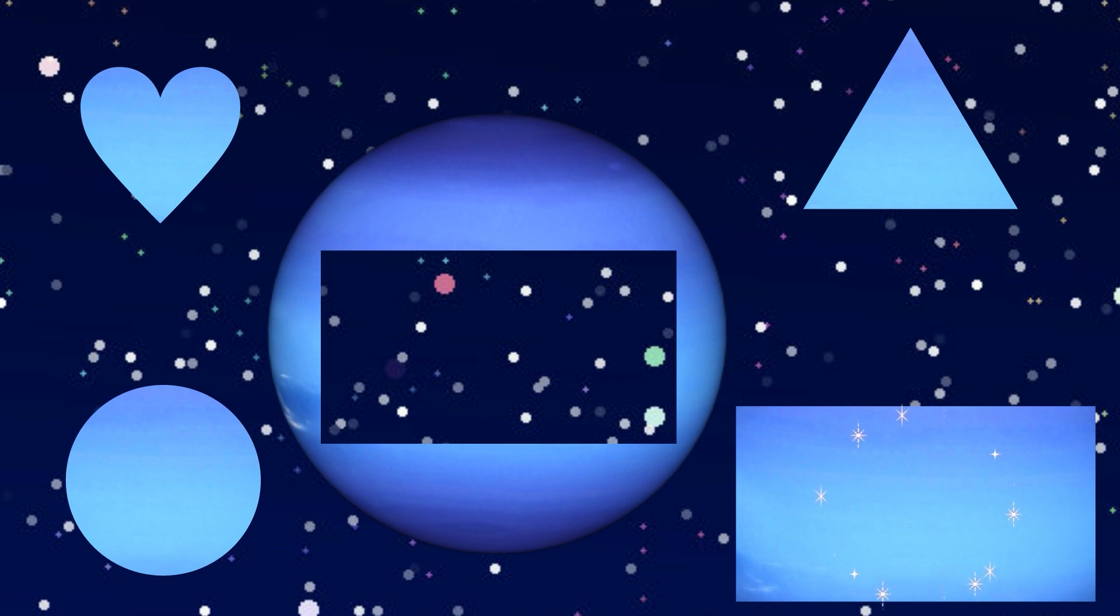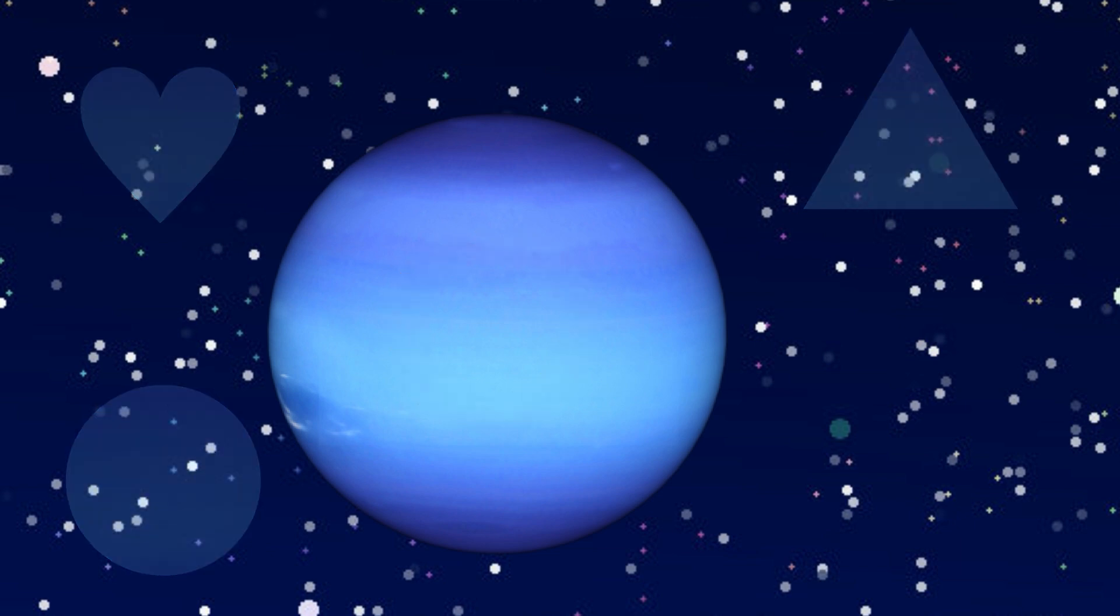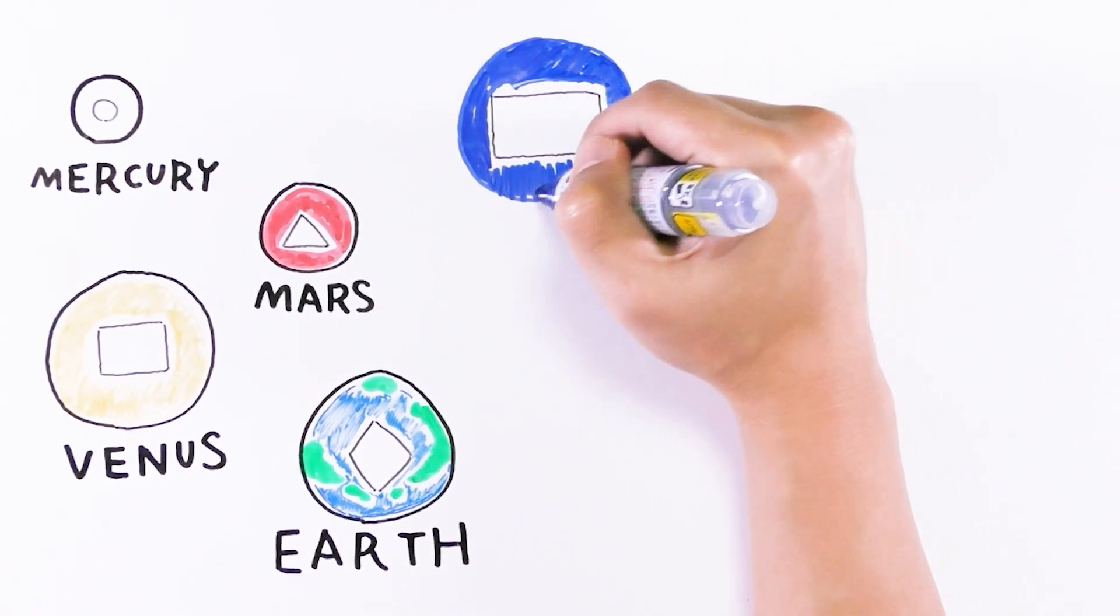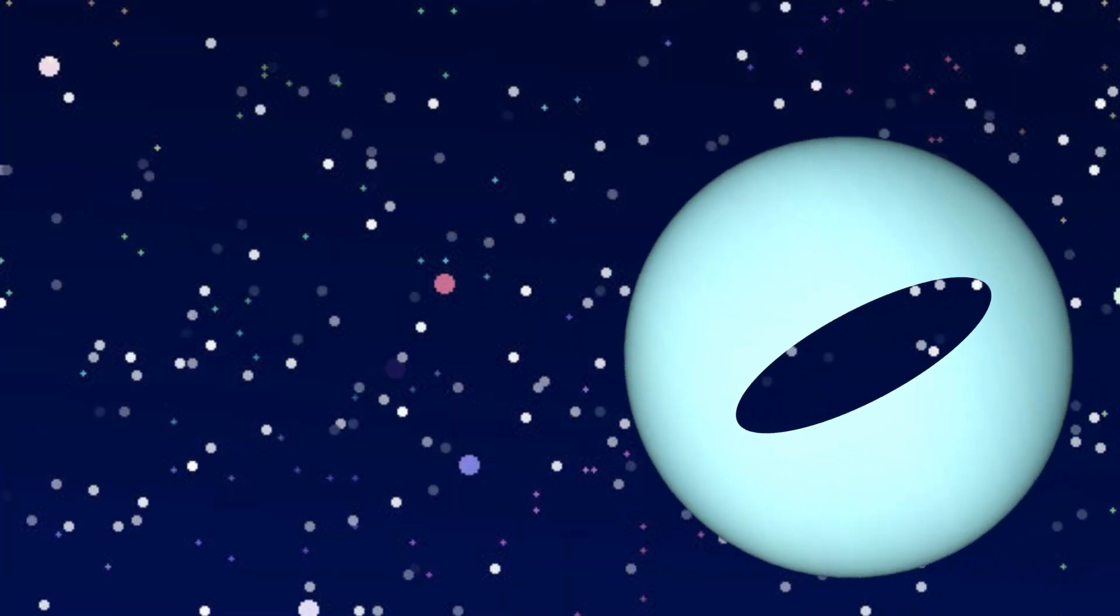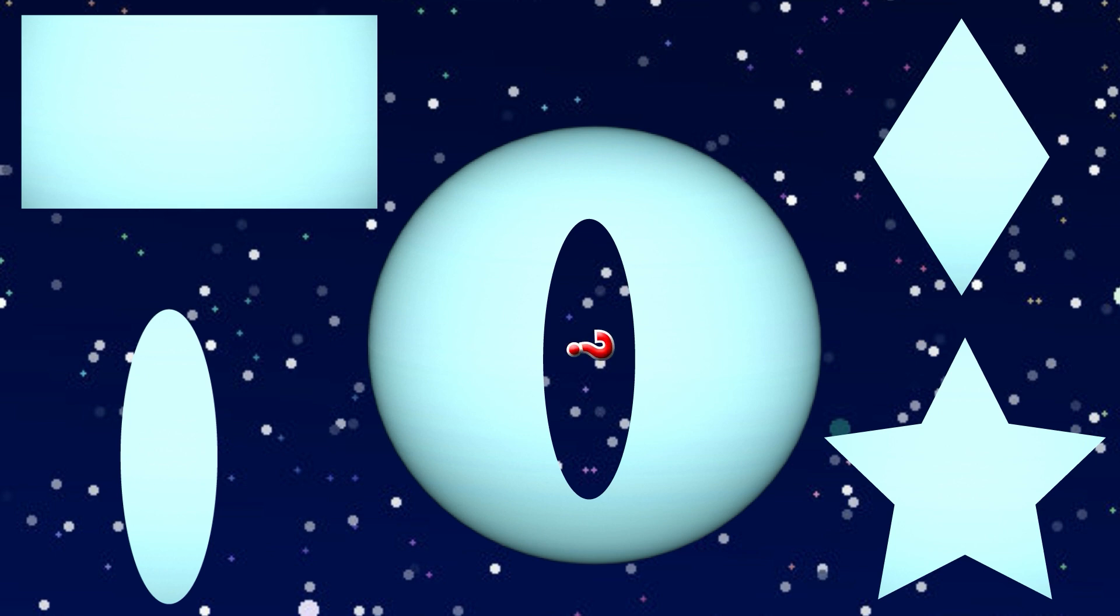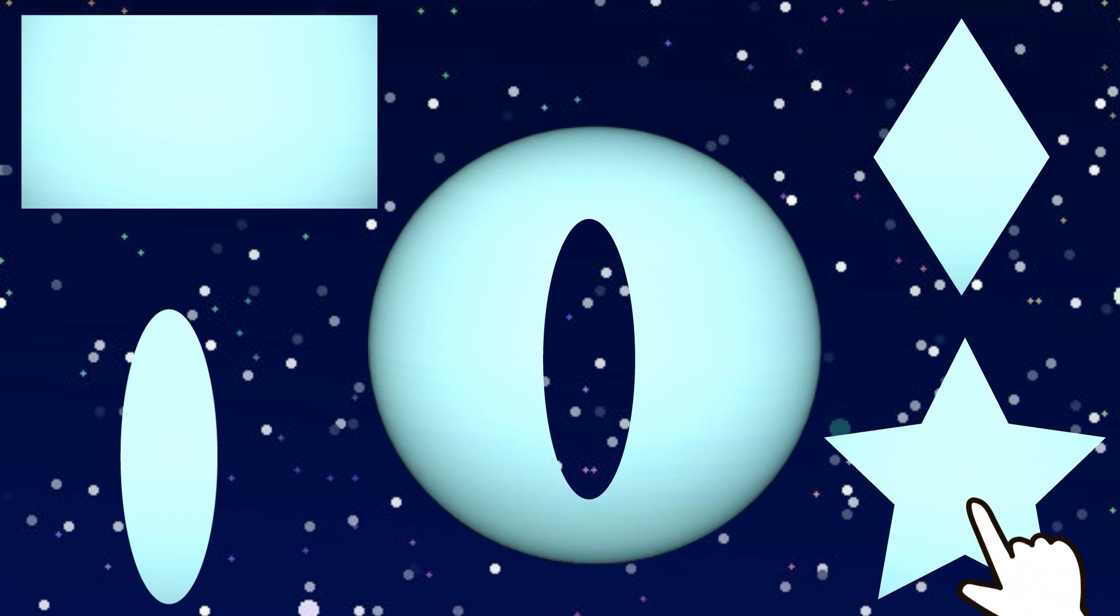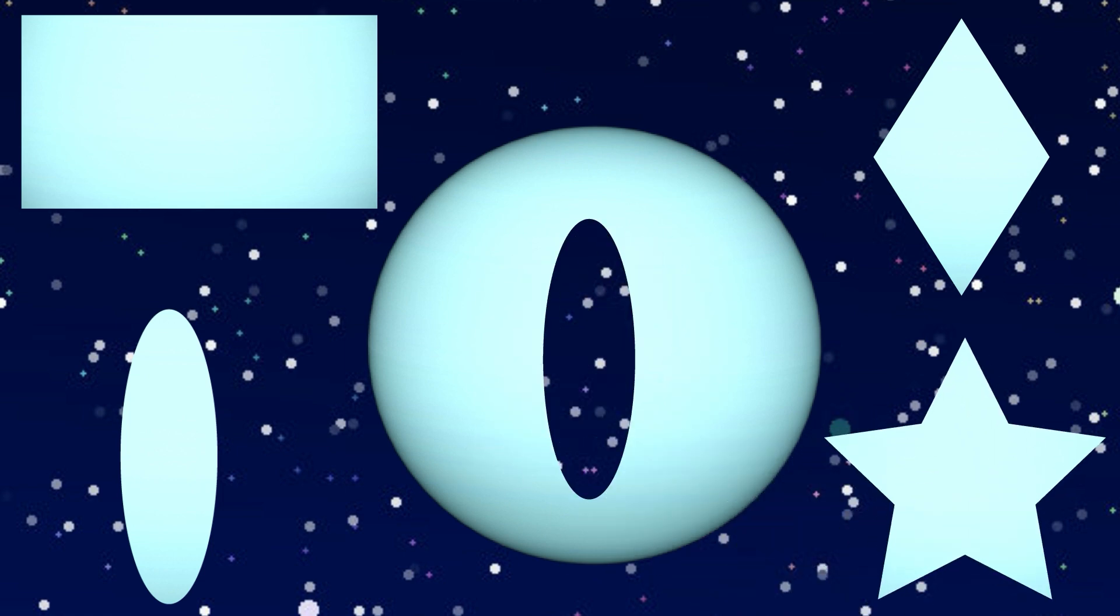Rectangle. Rectangle, Ellipse, Diamond, Star. What is this? Star. Ellipse. Ellipse.